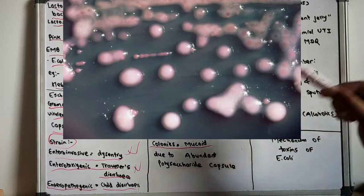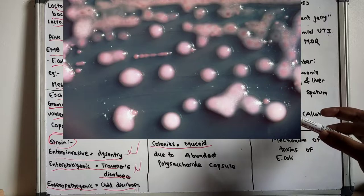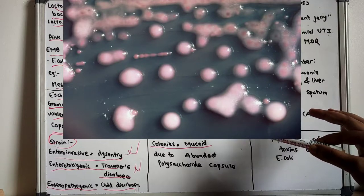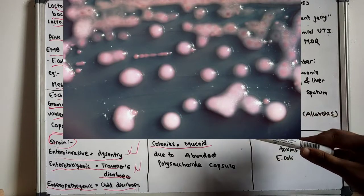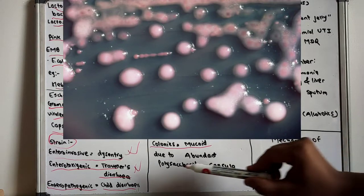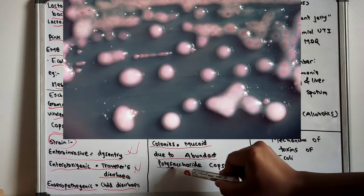The colonies appear mucoid. You can also see in this picture that the colonies of Klebsiella are mucoid in appearance. The mucoid appearance of this colony occurs due to the abundant polysaccharide capsule.